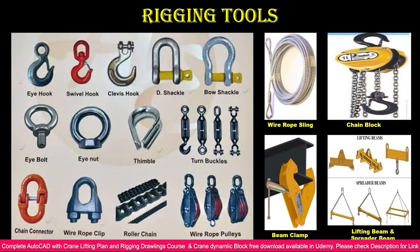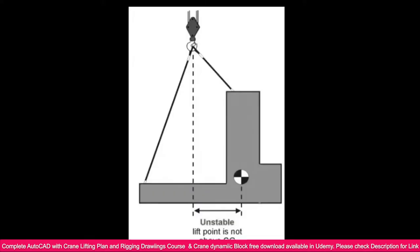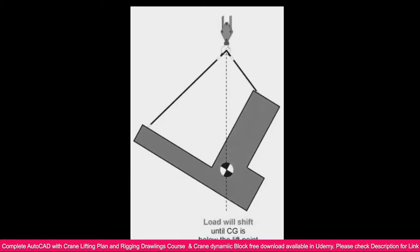When you lift any load, you need to place your lifting point exactly at the center of gravity (CG) point — that is very important. If the lifting point is not aligned with the CG point, the object cannot be lifted properly. As you can see in this slide, the CG is marked but the lifting point and CG are not in line, so if you lift it, the object will become unstable and tilt automatically.